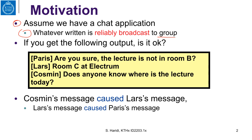Assume that we get the following output: Paris says 'Are you sure the lecture is not in room B?', Large says 'Room C at Electrum', and then Cosman says 'Does anyone know where is the lecture today?' Obviously the order of these messages is mixed up. The right order is Cosman saying 'Does anyone know where is the lecture?', then Large answering 'Room C at Electrum', then Paris answering 'Are you sure the lecture is not in room B?' So Cosman's message caused Large's message to be delivered, and Large's message caused Paris's message to be delivered to all individuals in the group.